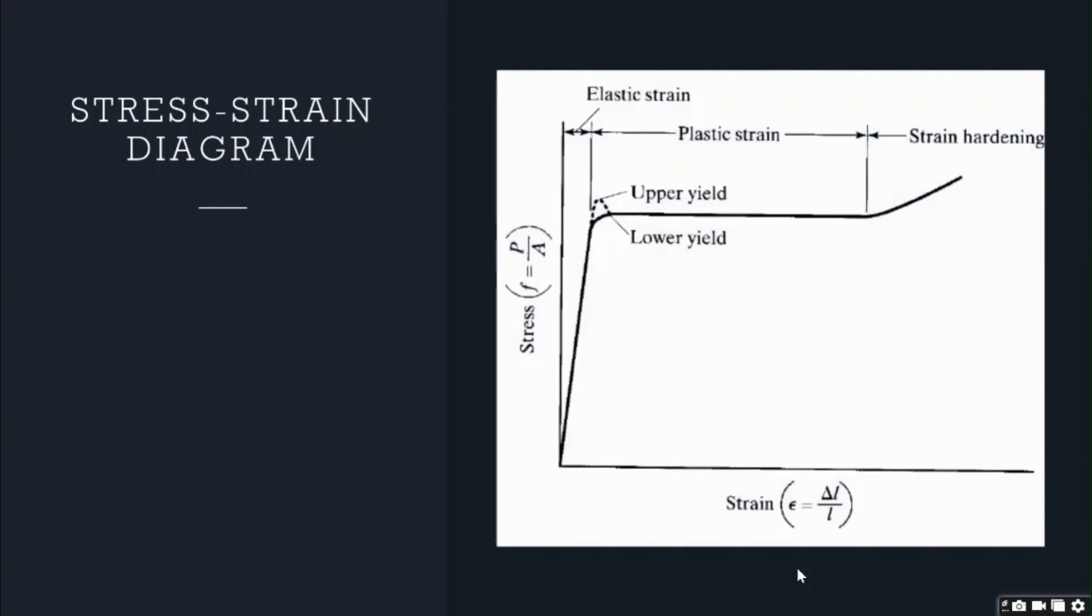Let's have a look at the diagram to your right. It's called a stress-strain diagram. As you can see, there is strain plotted on the horizontal axis and stress plotted on the vertical axis. The graph here explains the behavior of steel in tension.